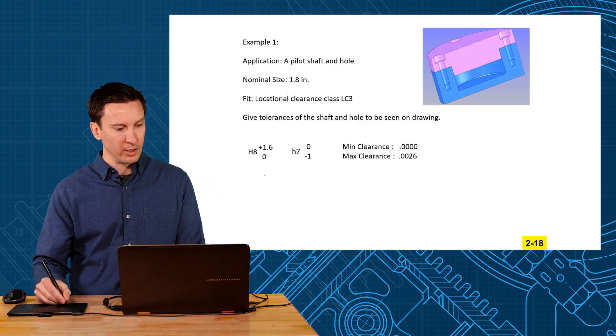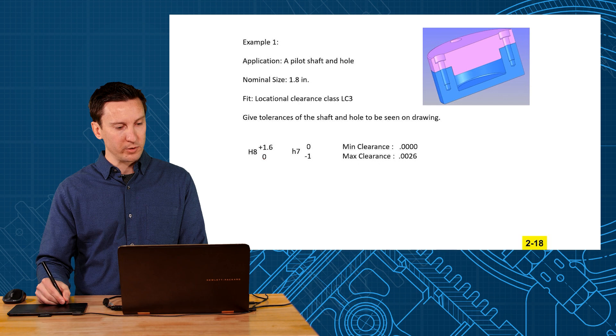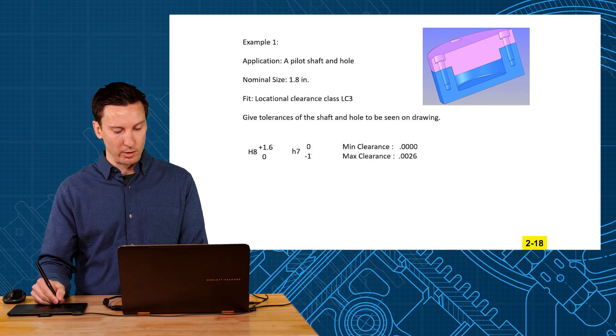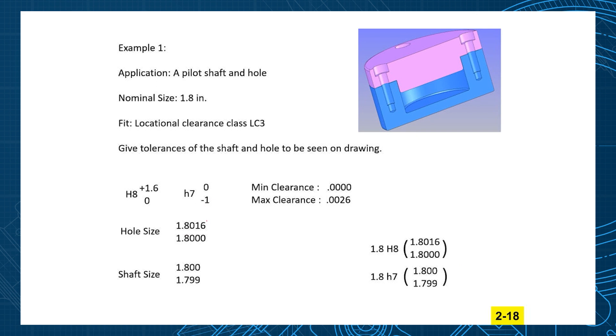Let's pull those numbers off the drawing. We had an H8 plus 1.6 minus zero and an H7 shaft plus zero minus one. So when we write that on the drawing, we need to take our nominal size 1.8 and add the 1.6 thou, subtract the zero, and same thing for the shaft. You're plus zero and then you're minus one. Those would be the numbers you see on the drawing.